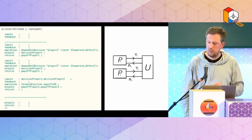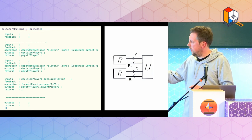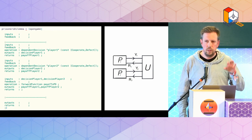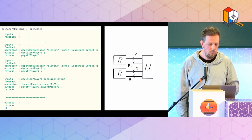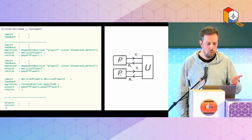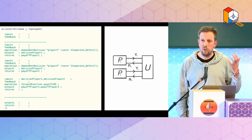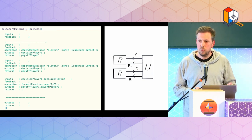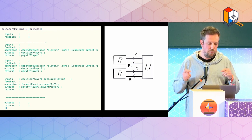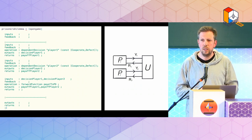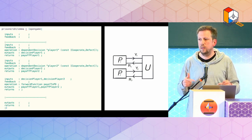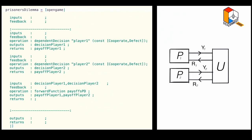Let me illustrate with the Prisoner's Dilemma code. The outside fields — inputs, returns, and so on — are all empty, as argued before. Internally there are three parts corresponding to P1, P2, and U. Player one makes a decision with output Y1 and an expected return R1; the same for player two. Finally, the forward function lifts the payoff matrix PD as a computation into the framework, taking the players' decisions and giving back the payoffs.